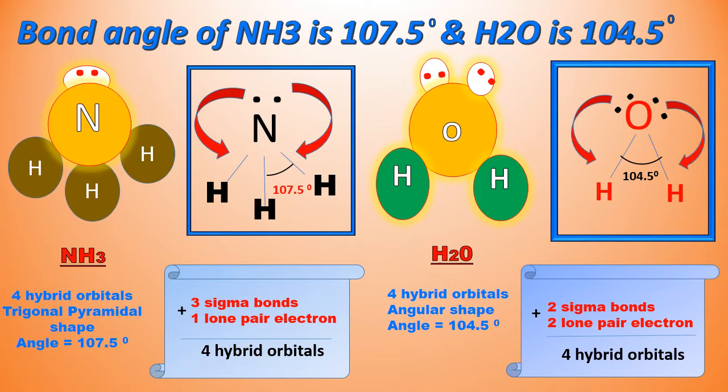Whereas in the case of water, we have two lone pairs and two bond pairs or sigma bonds. Again, we have four hybrid orbitals indicating sp3 hybridization in the water molecule.